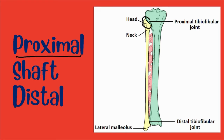At the proximal end, the fibula has an enlarged head which contains a facet for articulation with the lateral condyle of the tibia. On the posterior and lateral surface of the fibula neck, the common fibular nerve can be found. The fibula shaft has three surfaces: anterior, lateral, and posterior. The leg is split into three compartments and each surface faces its respective compartment.